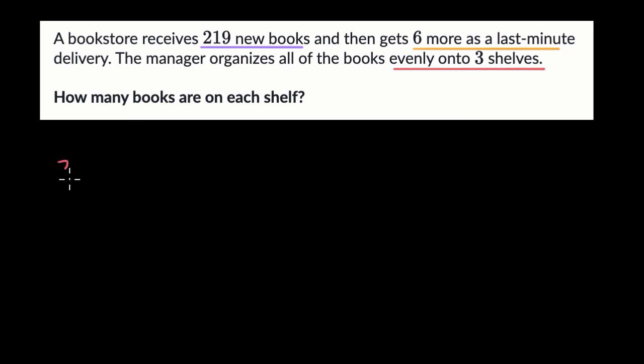The total number of books is going to be 219. I'm gonna try to keep the colors the same. 219 books and then they get six more. So this is the total number of books. We're going to want to calculate that first and then we want to divide that evenly into three shelves. So we could just divide that by three.